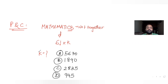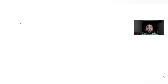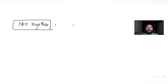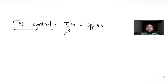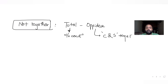Let's figure out which option is the correct answer for the value of K. To find the number of ways in which C and S are not together, we use the complementary approach: total arrangements minus the opposite idea. Total means without any condition, and the opposite idea means C and S should be together. We'll calculate both separately and then subtract.